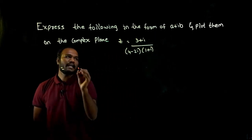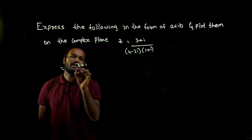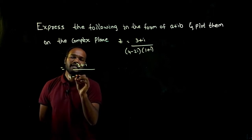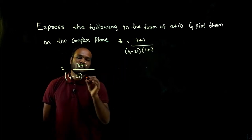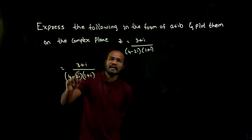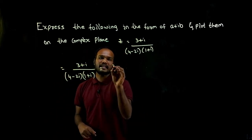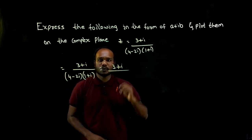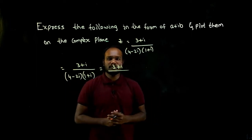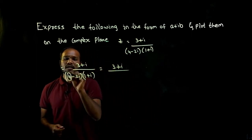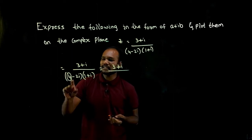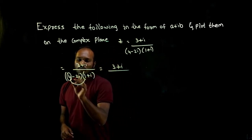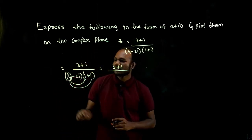We have 3 plus i divided by 4 minus 2i times 1 plus i. In the numerator we have one complex number, but in the denominator we have two complex numbers. So we need to convert this into a single complex number. Each one number we have to multiply to this and also to this.